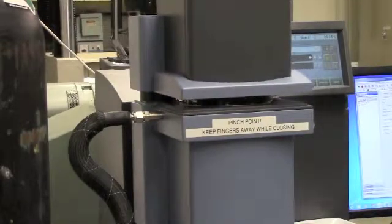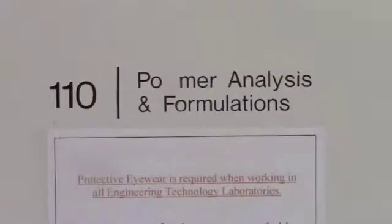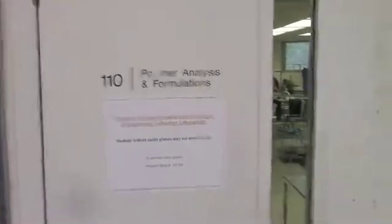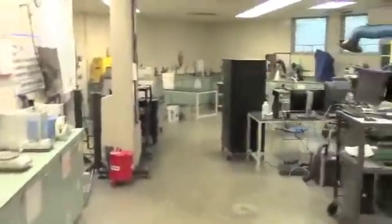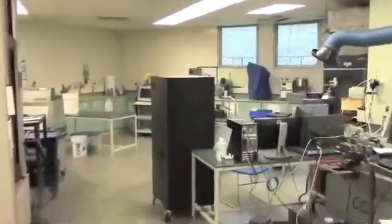The DMA is located inside the polymer analysis lab, which is inside the plastics processing lab. Everything needed to operate the DMA is located either on the DMA or inside the mobile cabinet next to the machine.